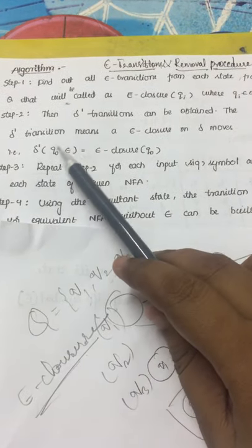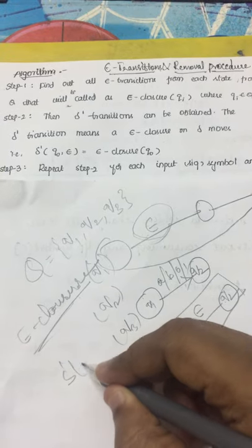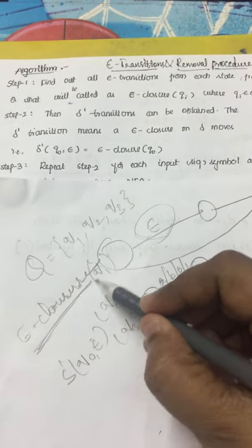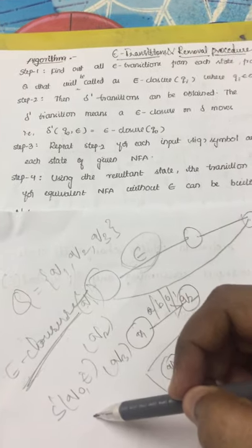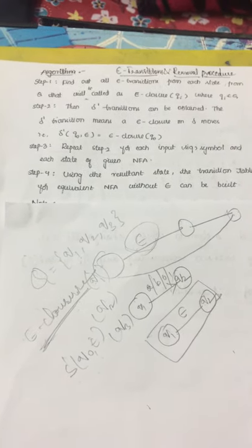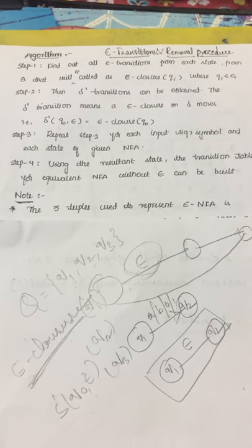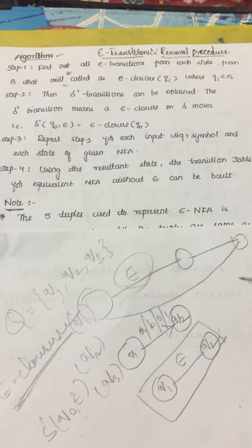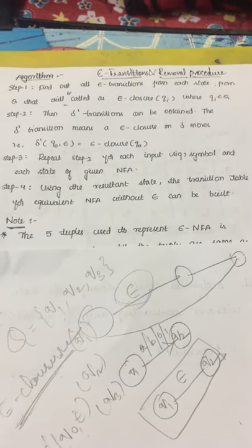In step 2, the delta dash transitions are obtained. Delta dash transition means epsilon closure on delta moves — delta dash transitions are nothing but our epsilon closure values. In step 3, we repeat the steps to find the delta dash values for each and every state. In step 4, we get the resultant states and draw a transition table for an equivalent NFA without epsilon, and then construct a transition diagram.